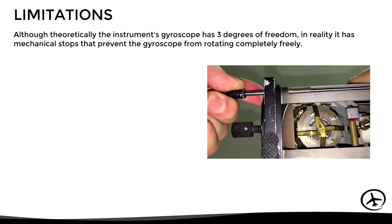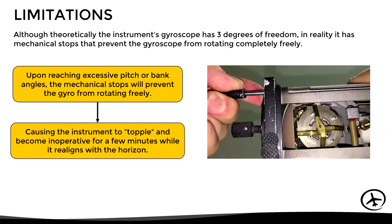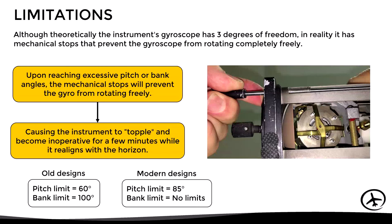Although this instrument is very useful for determining pitch and bank attitude quickly and accurately, it has limitations. While theoretically the gyro has three degrees of freedom, in reality it has mechanical stops that prevent completely free rotation. If the aircraft reaches excessive pitch or bank angles, the mechanical stops will cause the gyro to topple and the instrument to become inoperative for a few minutes while it realigns. On older instruments, pitch limits are typically 60 degrees and bank limits around 100 degrees; more modern instruments allow up to 85 degrees of pitch with no bank limits.